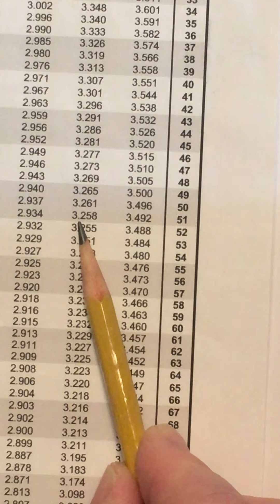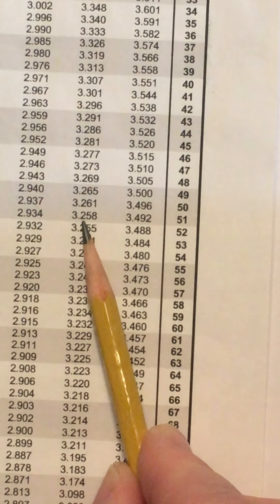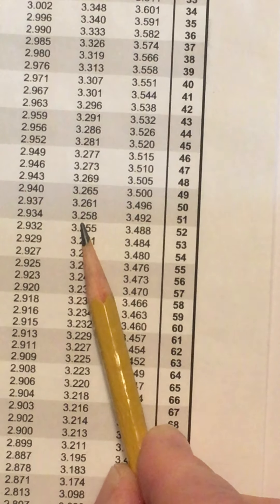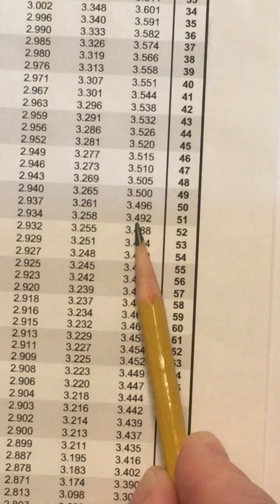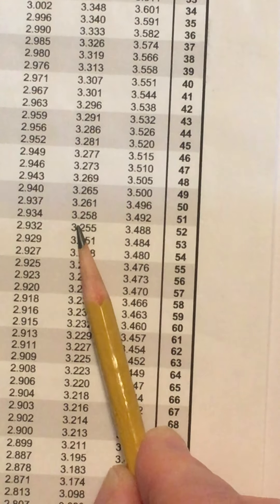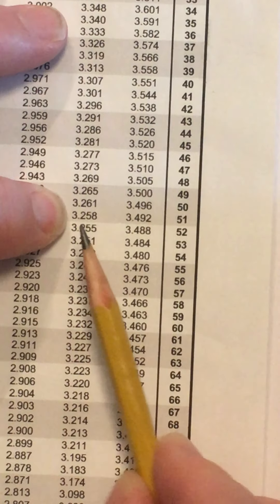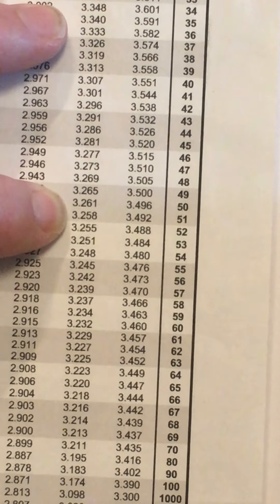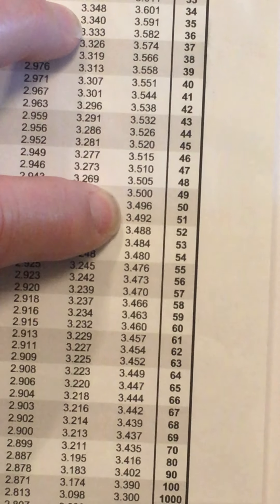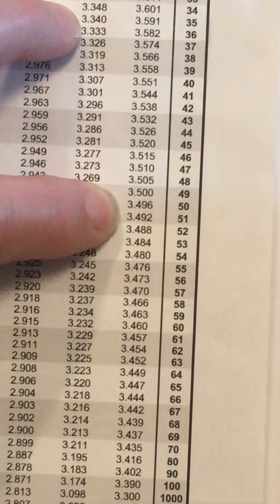3.258. This is 3.492. Find the two numbers between which it falls. So we have 3.258 and we have 3.492. So this is the procedure we'll work with.